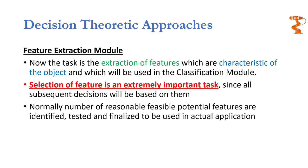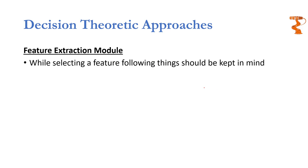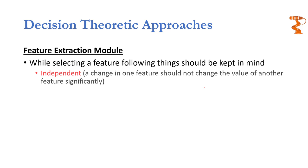Therefore features should be selected very carefully, because classification depends only on the features extracted in the feature extraction module. If you extract useless features you won't be able to classify the objects. A number of reasonable potential features are extracted, tested, and then finalized for use in actual applications. While selecting features, there are certain guidelines to keep in mind. The first is that a feature should be independent — a change in one feature should not significantly change the value of another feature, because if they are dependent, the other feature is not giving any useful additional information.